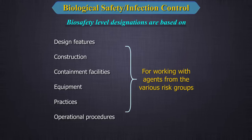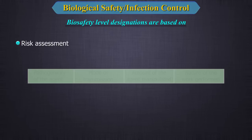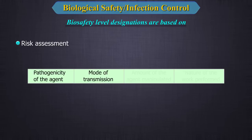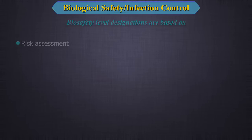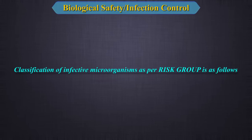And 2. Risk assessment, which evaluates the pathogenicity of the agent, the mode of its transmission, the amount of the agent manipulated, and the nature of the work performed. How do we classify infective microorganisms as per the risk group?